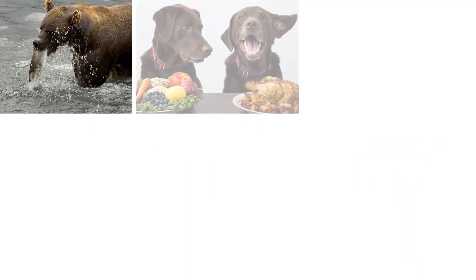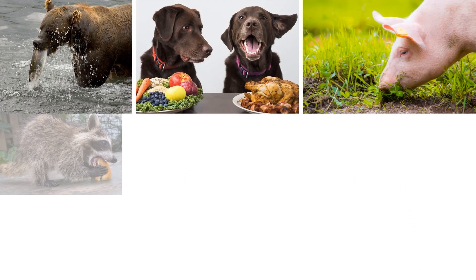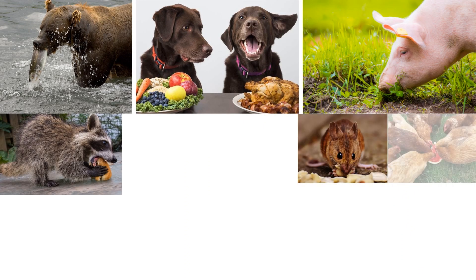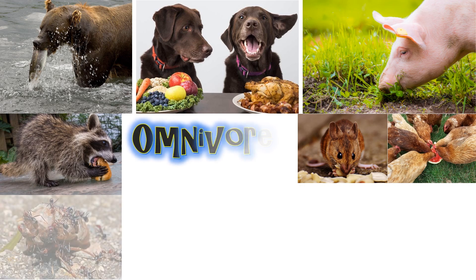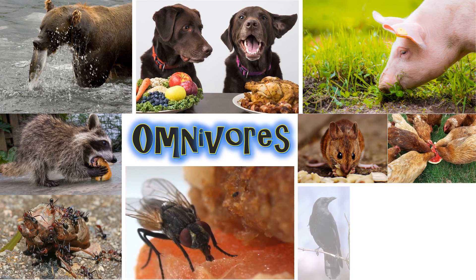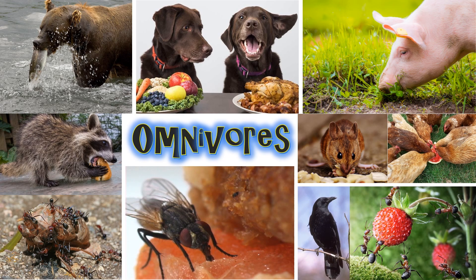Animals that eat both plants and other animals are called omnivores. Chickens, bears, pigs, crows, and rats are some examples.